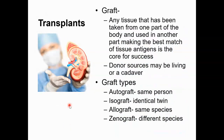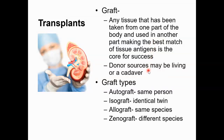Next, let's talk about transplants — organ or tissue transplants. A graft is any tissue that has been taken from one part of the body and used in another part. Making the best match of tissue antigens is the core for success, or success will be poor. Donor sources may be living or a cadaver — a living example would be someone donating a kidney or blood for bone marrow transplant, or from a deceased donor for heart, lung, or eyes.